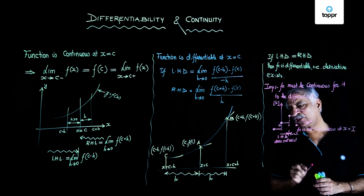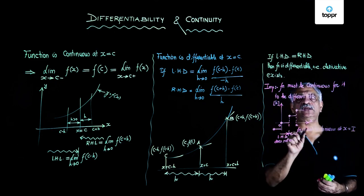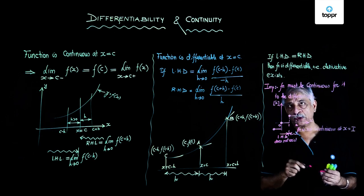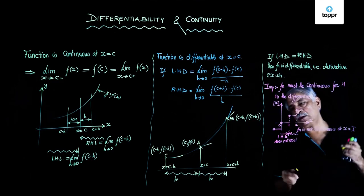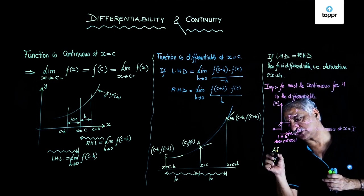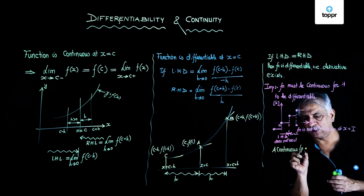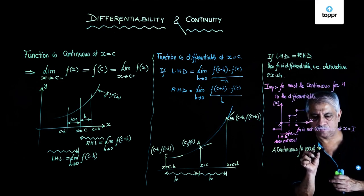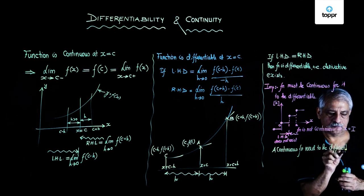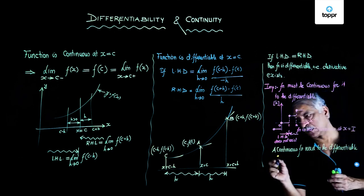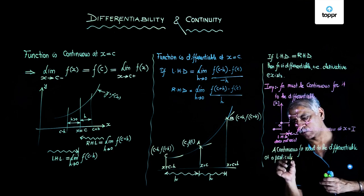This brings a very important conclusion: the function needs to be continuous to be differentiable. The second aspect is that a continuous function need not be differentiable at a particular point.